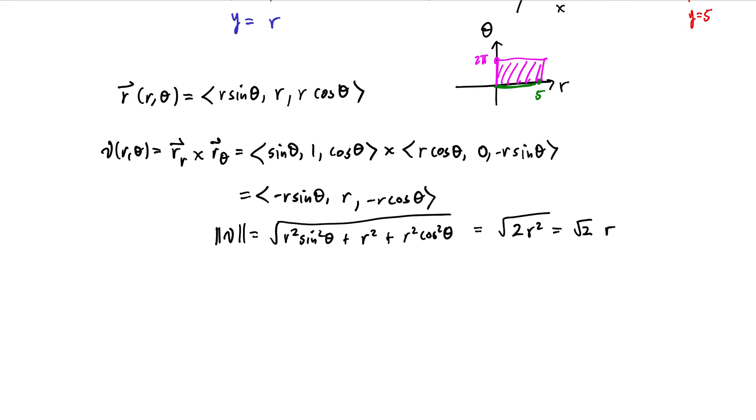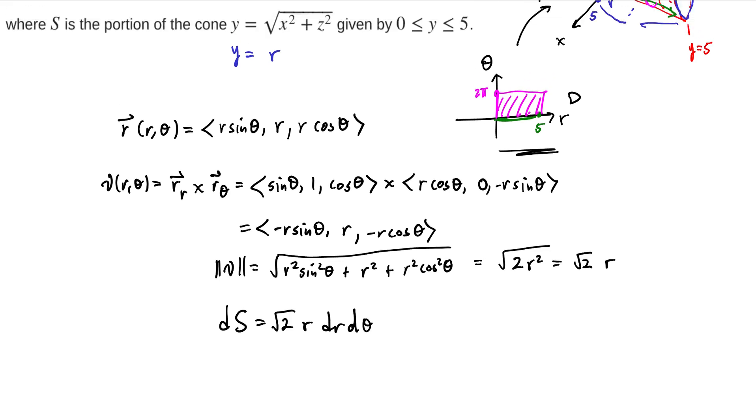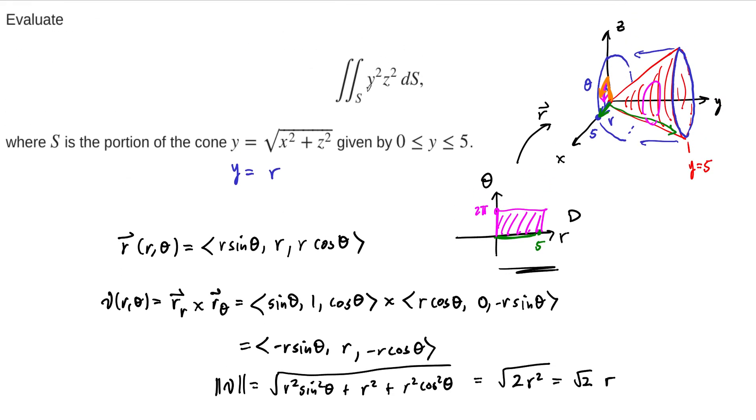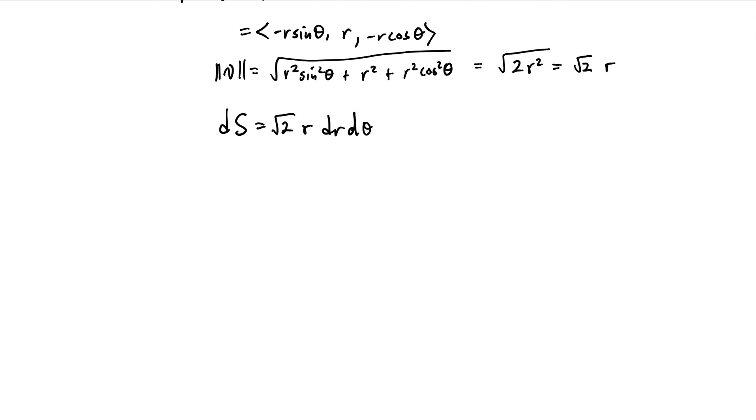And now we need to integrate all this up. So all this tells us is that our ds is going to be this: it's going to be square root of 2r dr d theta. This is a rectangle here in our parameter domain. And then we need to swap out these terms and then just integrate it up. And we've got our domain right here as a rectangle, so we're ready to go.